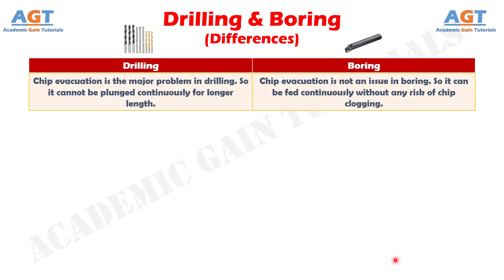Number 7: Chip evacuation is the major problem in drilling, so it cannot be plunged continuously for longer length, whereas chip evacuation is not an issue in boring, so it can be fed continuously without any risk of chip clogging.